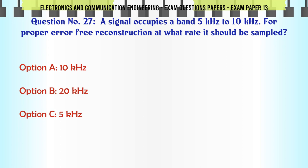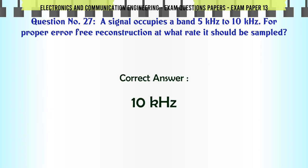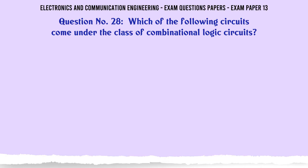A signal occupies a band 5kHz to 10kHz. For proper error-free reconstruction, at what rate should it be sampled? A: 10kHz, B: 20kHz, C: 5kHz, D: 10 minus 5 times 2kHz. The correct answer is 10kHz.